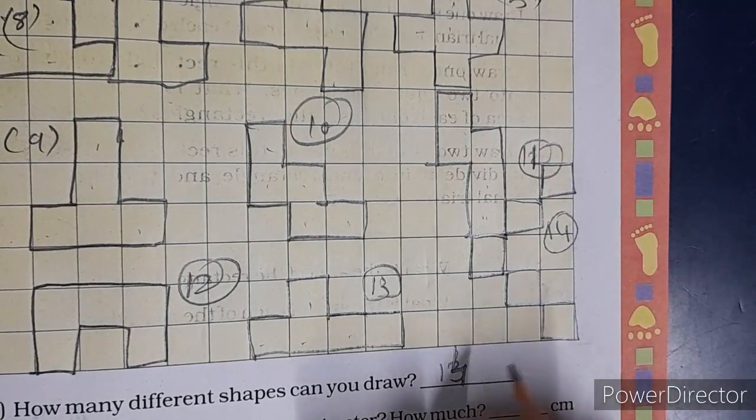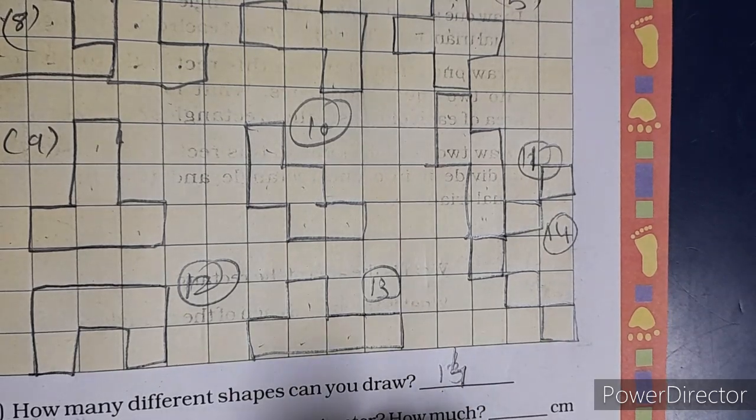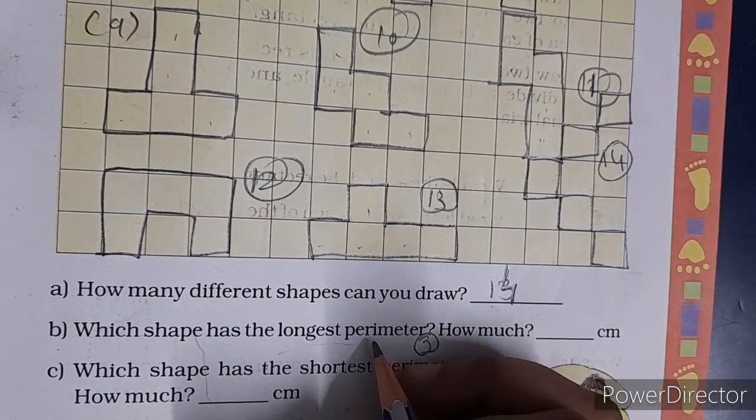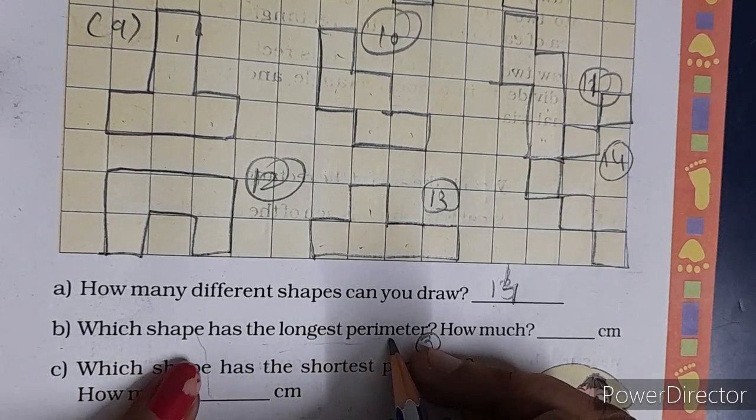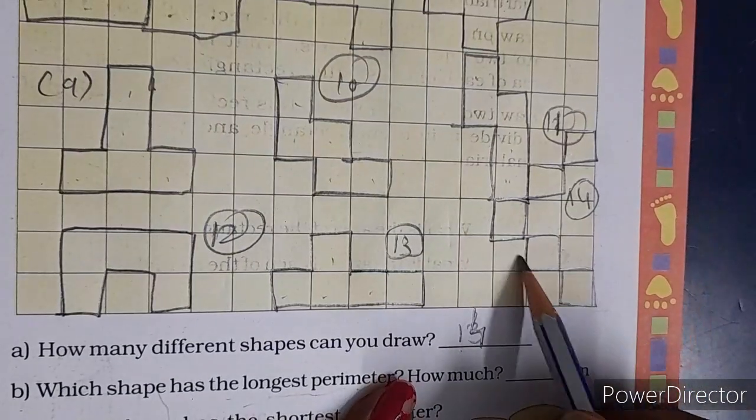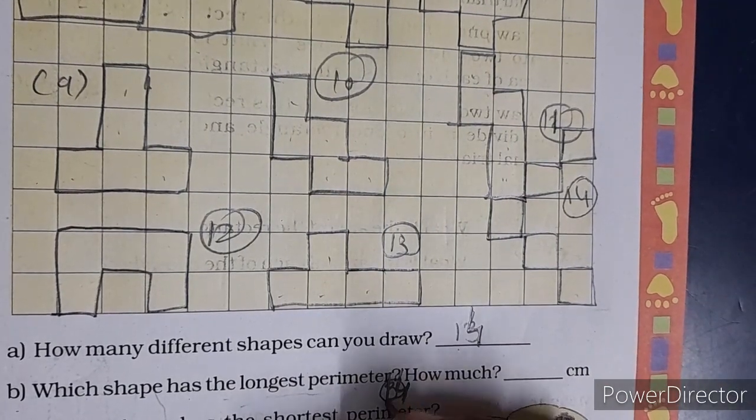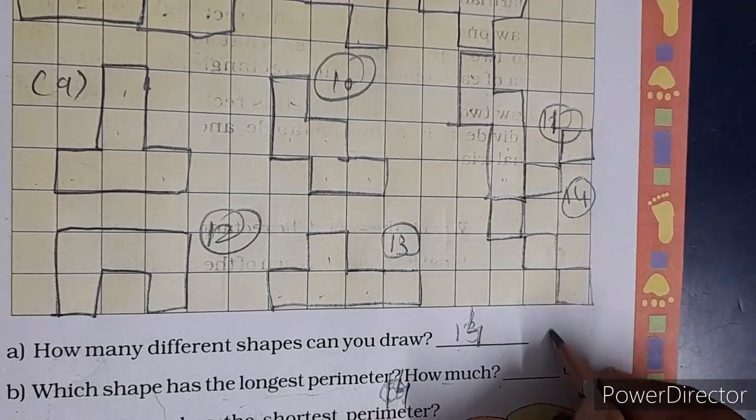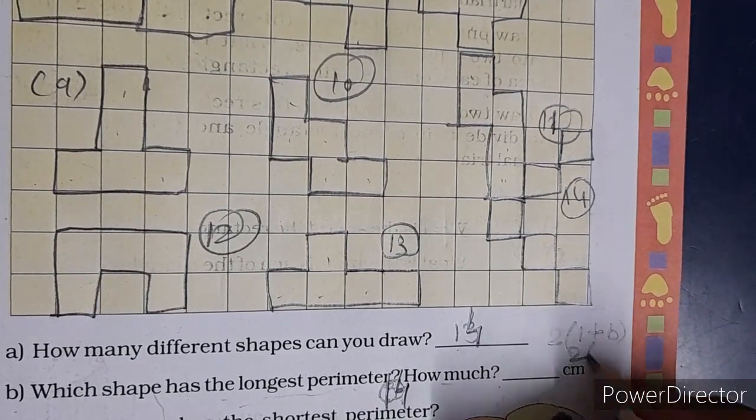So this is our 14 total shapes. Which shape has the longest perimeter? The longest perimeter, figure number 14, is the longest. Perimeter how do we find? Length plus breadth.